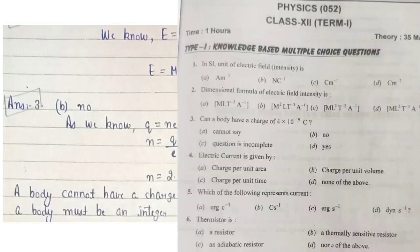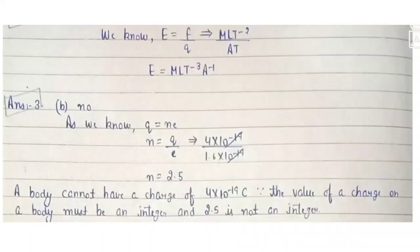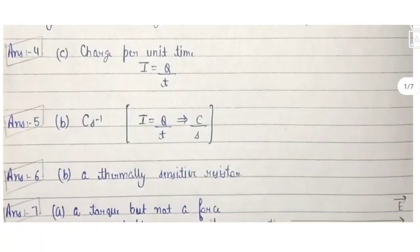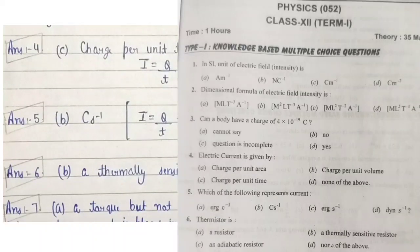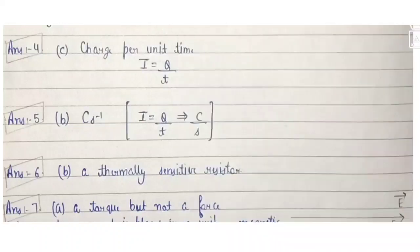Third question: can a body have a charge of 4 × 10⁻¹⁹ coulombs? To check this, we calculate the number of electrons. The number of electrons comes out to 2.5, and since 2.5 electrons is not a whole number, this charge is not possible — charge must be an integer multiple of the electron charge.